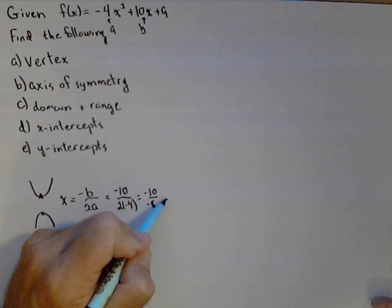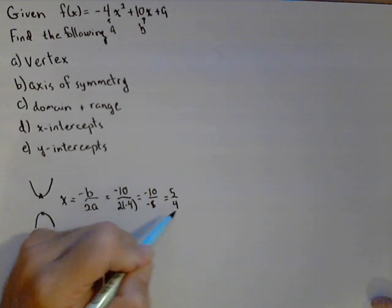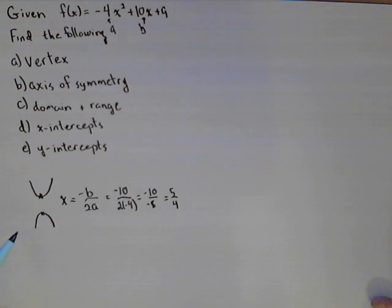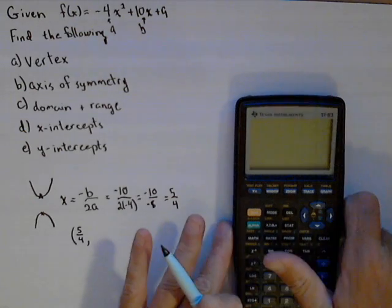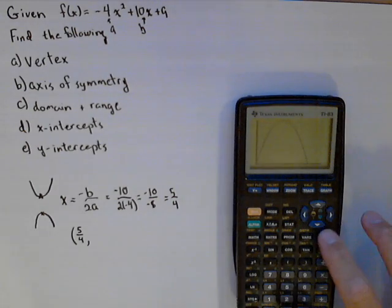Or 5 fourths. Now a vertex has two coordinates. It's a point. The x-coordinate is 5 fourths. The y-coordinate we can find by plugging in our x-coordinate to see what we get. Let's go ahead and use the calculator for this, so we can see how it would be put in.